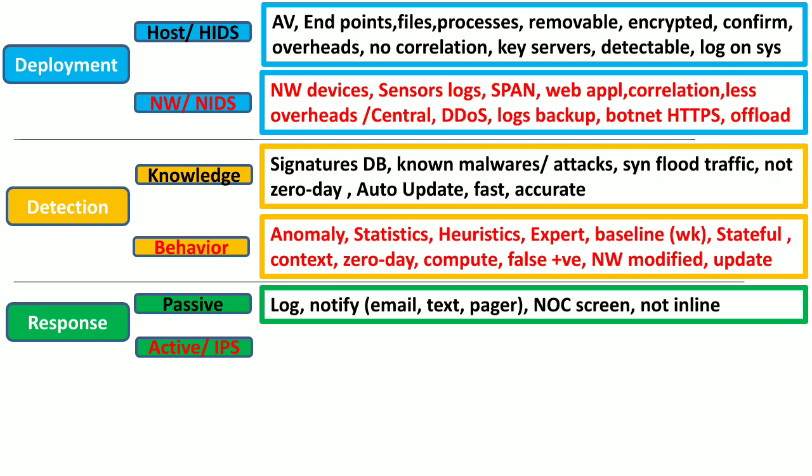Passive response Intrusion Detection Systems do not stop an attack — they simply log the attack and notify the administrator via email, text, or pager. They can also display alerts on network operating systems. They are not in line with network traffic, so they only notify the administrator and do not stop an attack.